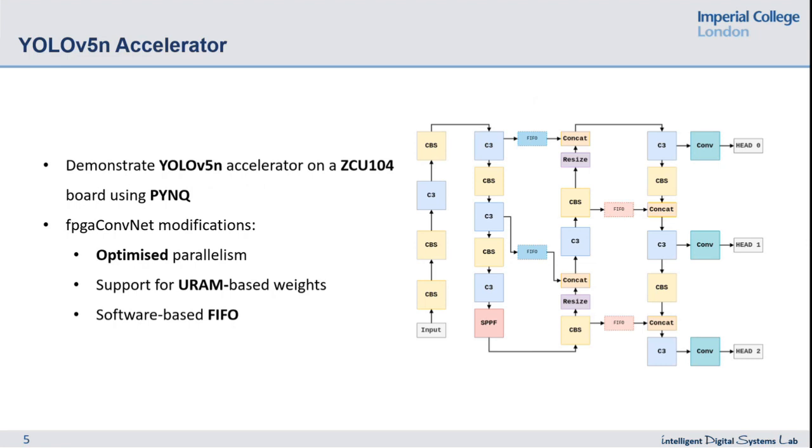In this submission we're demonstrating a YOLOv5n accelerator running on a ZCU104 board using PYNQ as host code. The modifications we've made to fpgaConvNet include optimizing the parallelism, supporting URAM-based weights, and implementing a software-based FIFO.